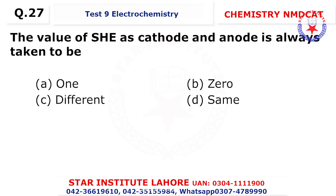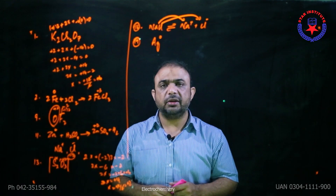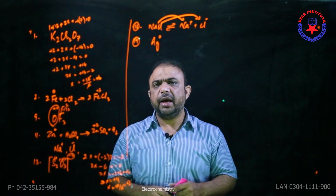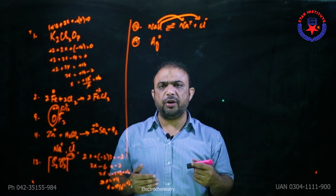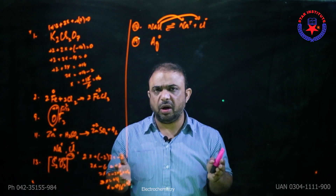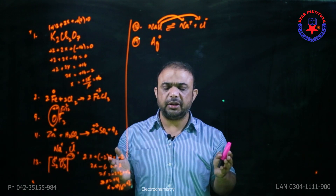Question 27: the value of the standard hydrogen electrode (SHE) at cathode or anode is always taken to be zero. Whether you use it as an anode or cathode, the value remains zero.